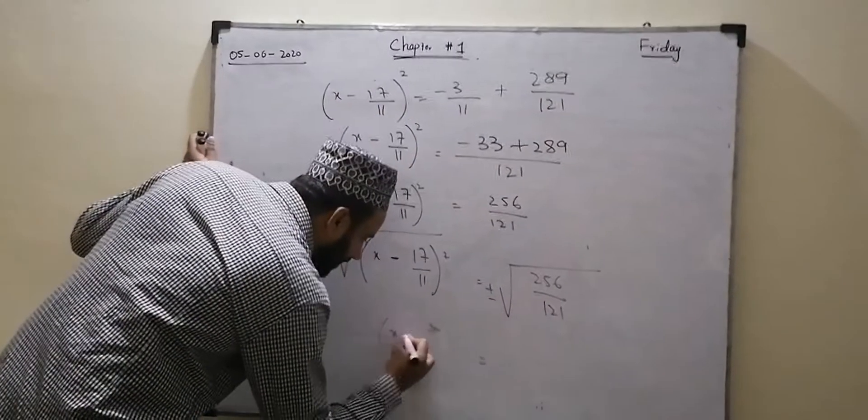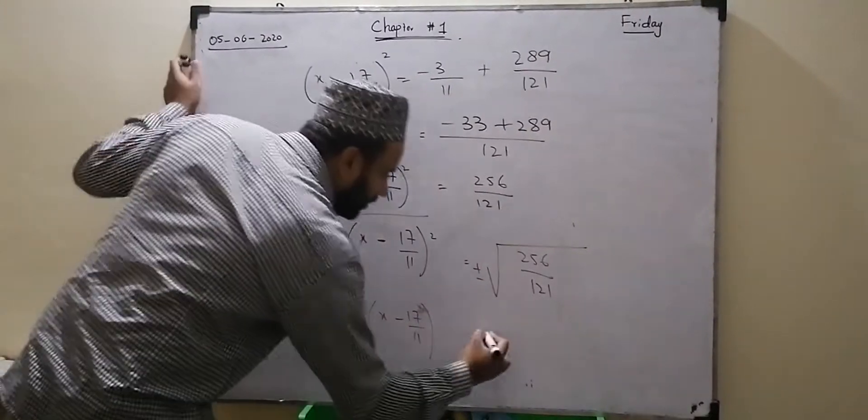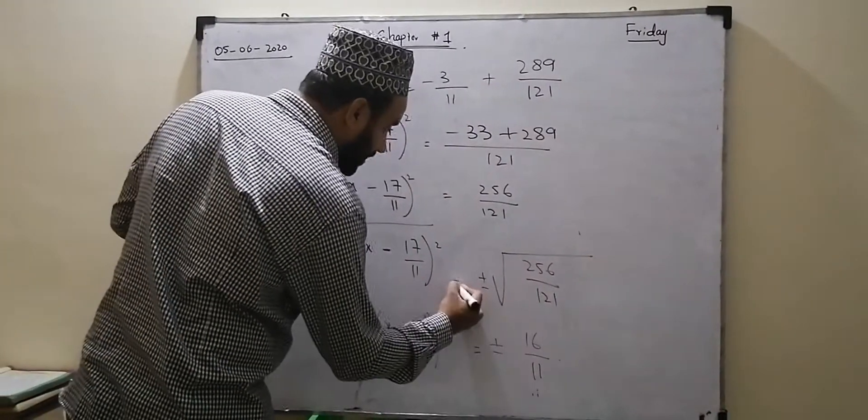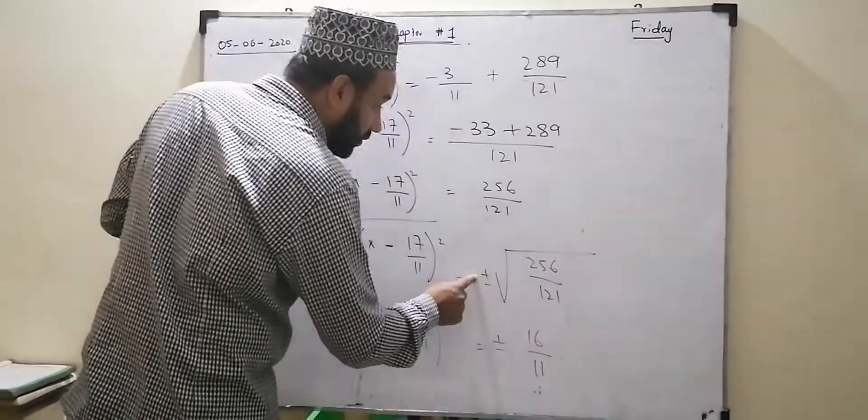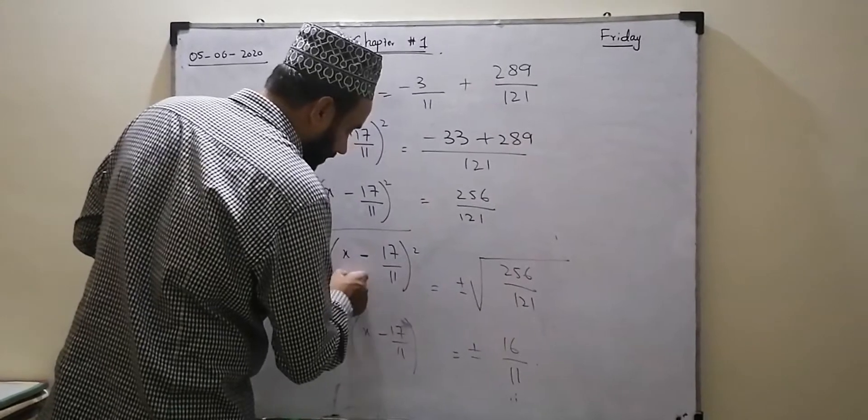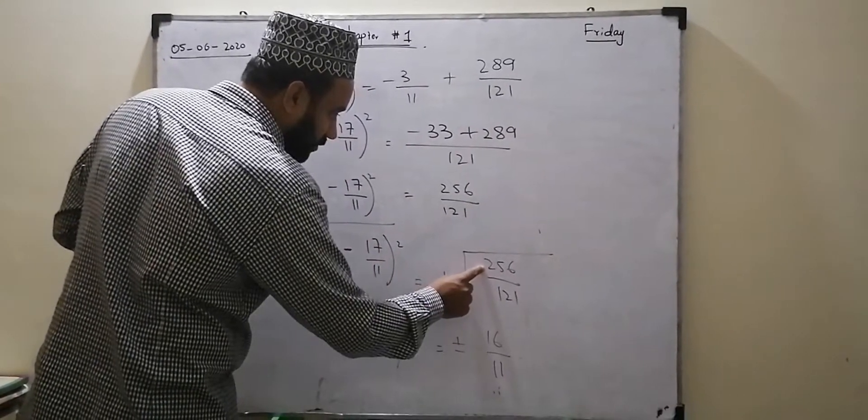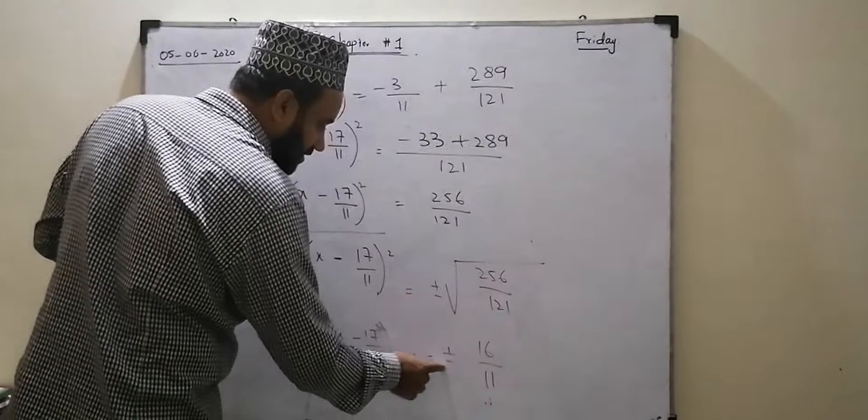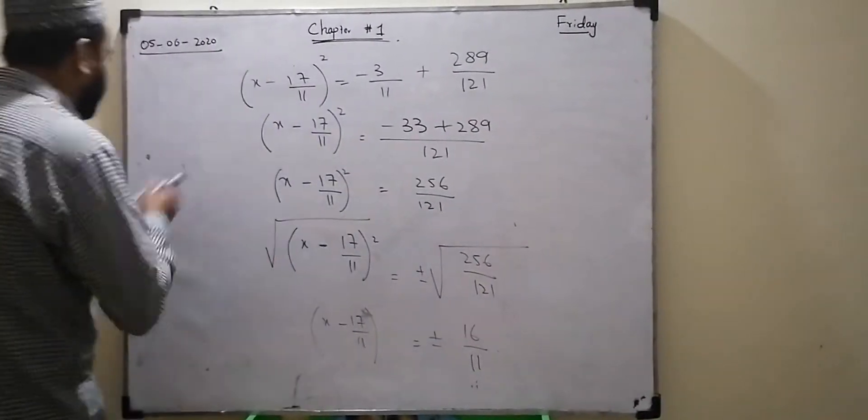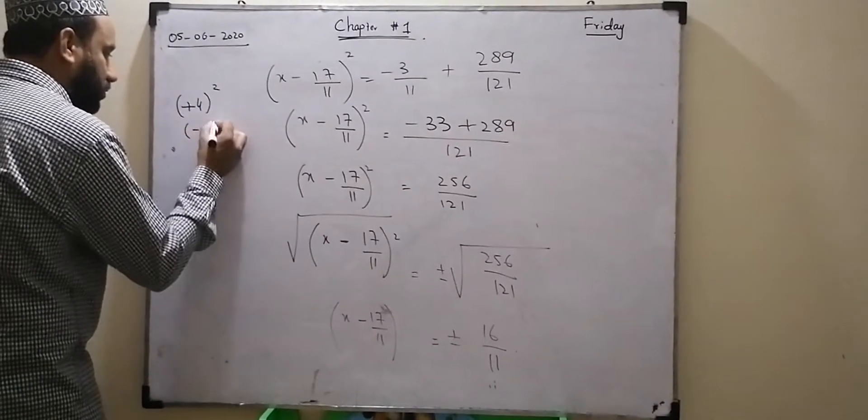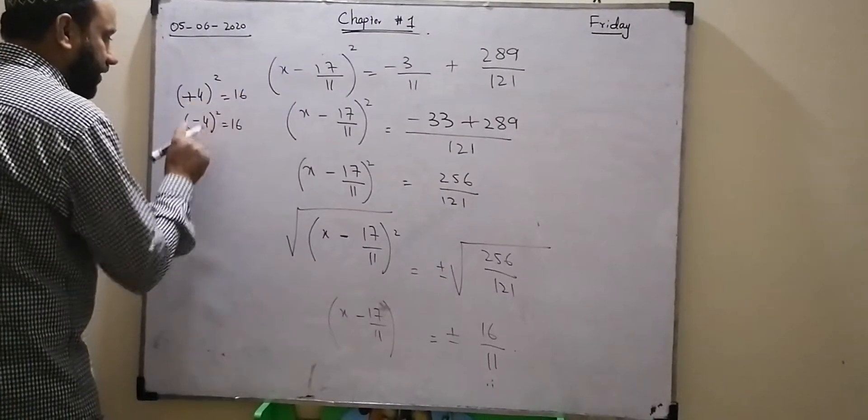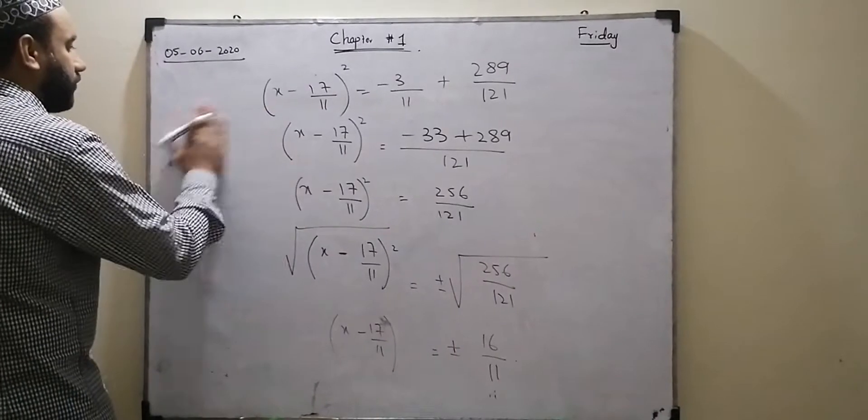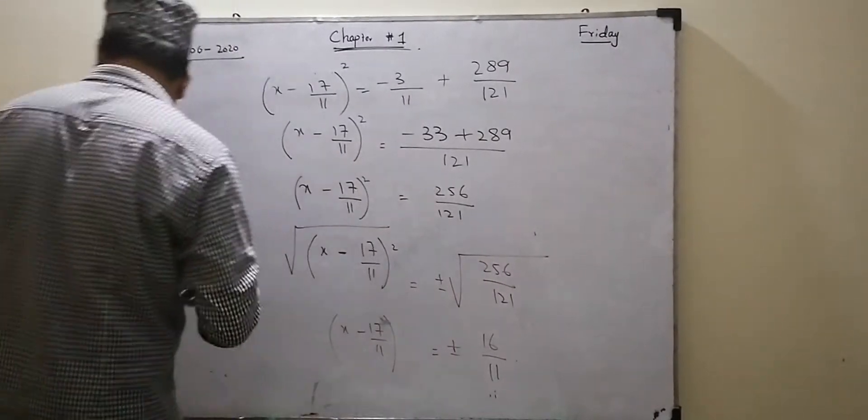So what will happen? x minus 17 by 11 equals plus minus 16 by 11. I have told you again that why we take the plus minus, because x is a variable so we can get all the possibilities of it. Plus 4 square and minus 4 square, the negative value and positive value is the same. That's why we have both possibilities.